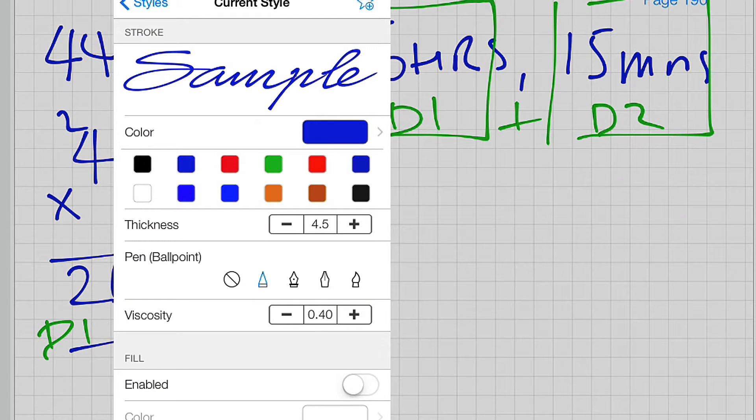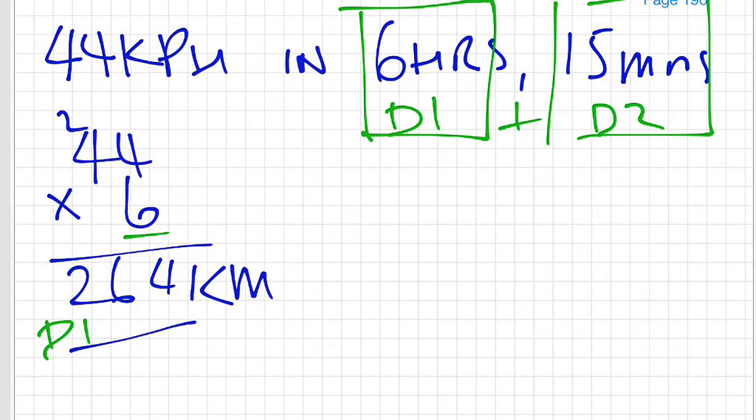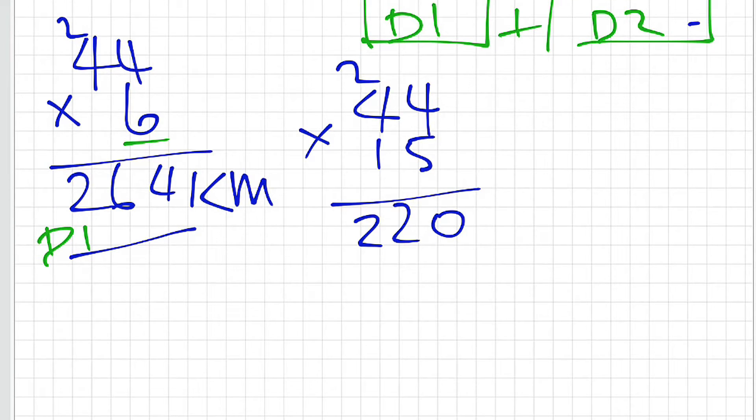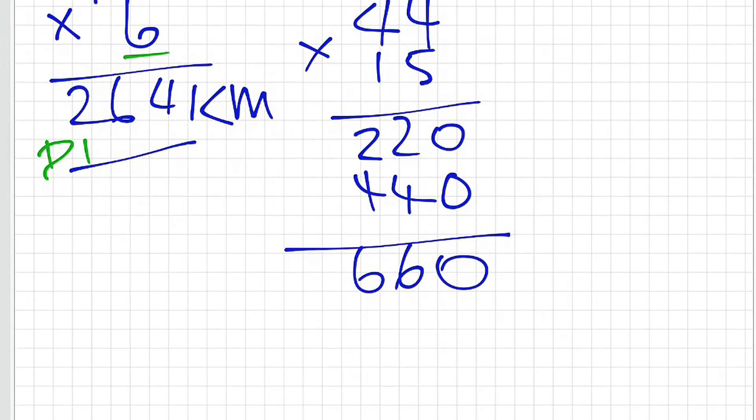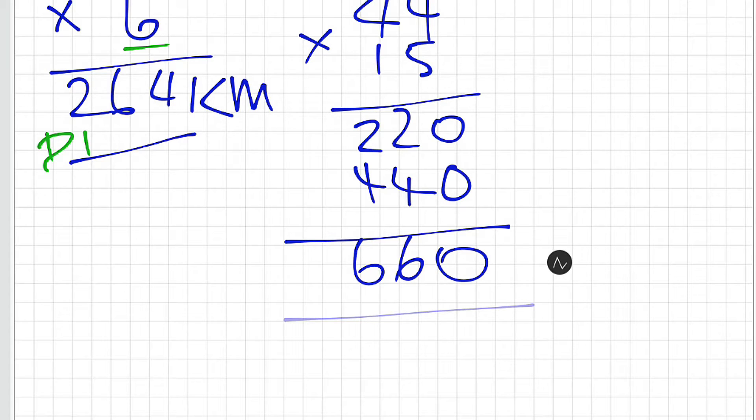Now we are going to move on to part 2, the minutes. 44 km per hour times 15 minutes. 5 times 4 is 20, carry the 2. 5 times 4 is 20 plus the 2 again, 22. Moving into the next column, don't forget my 0. 1 times 4 is 4, 1 times 4 is 4. 0, 6, 6.